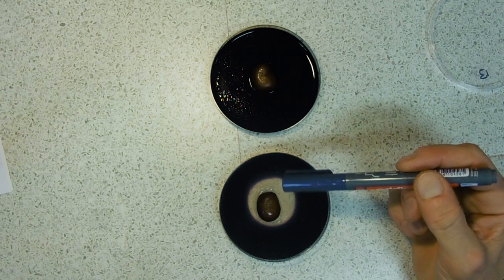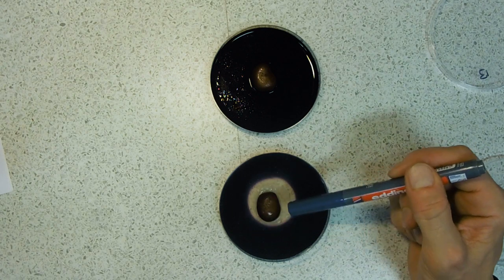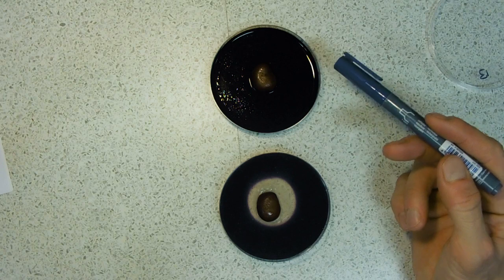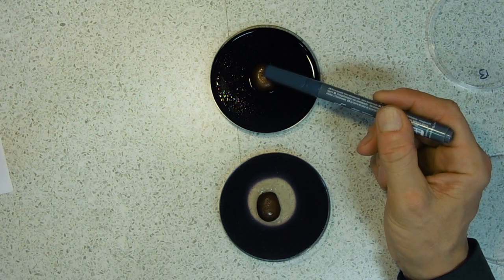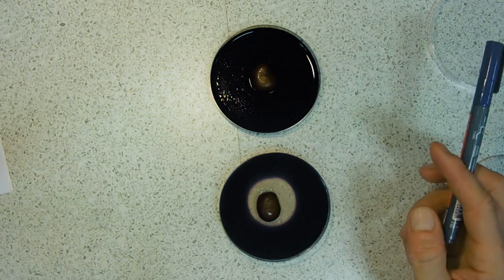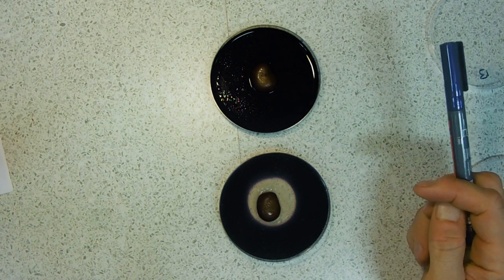After a day, this bean has got a clear zone around it in the agar, whereas the one that's been boiled looks exactly the same after we've added iodine solution.